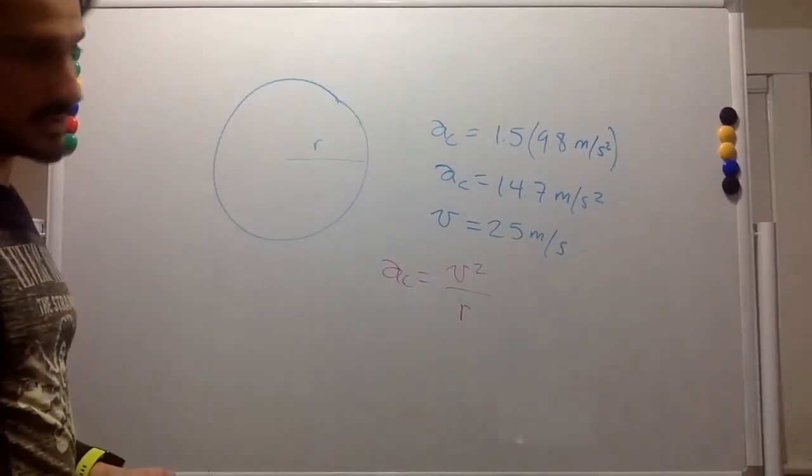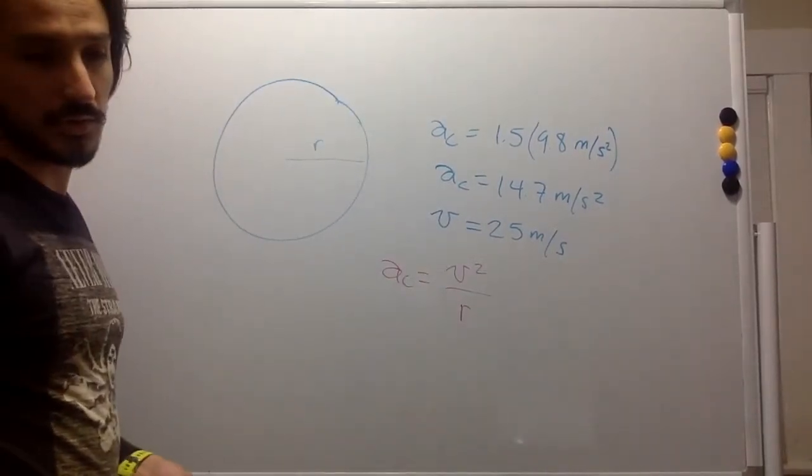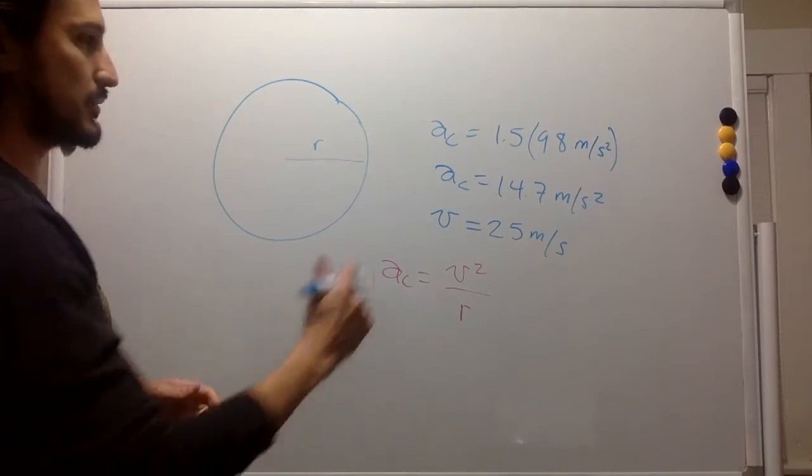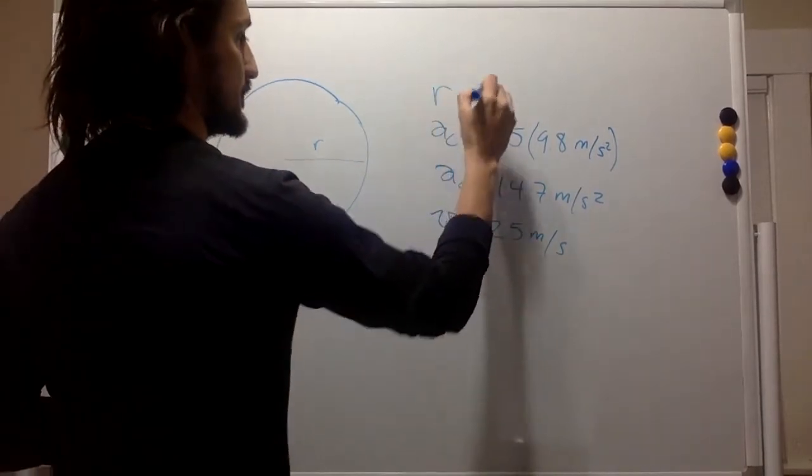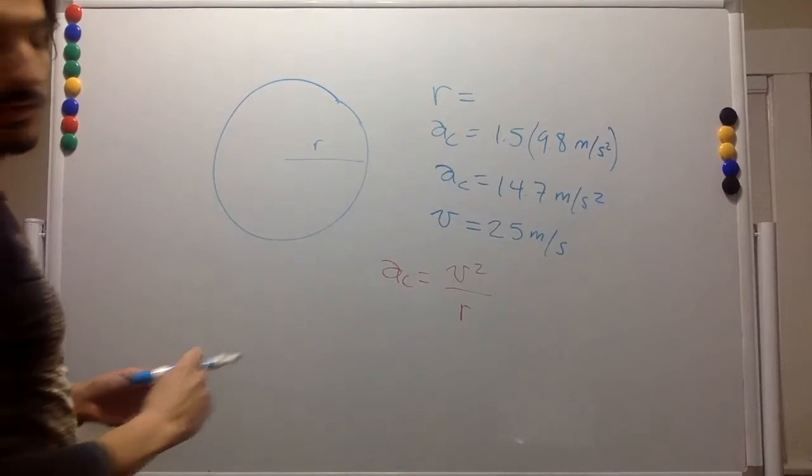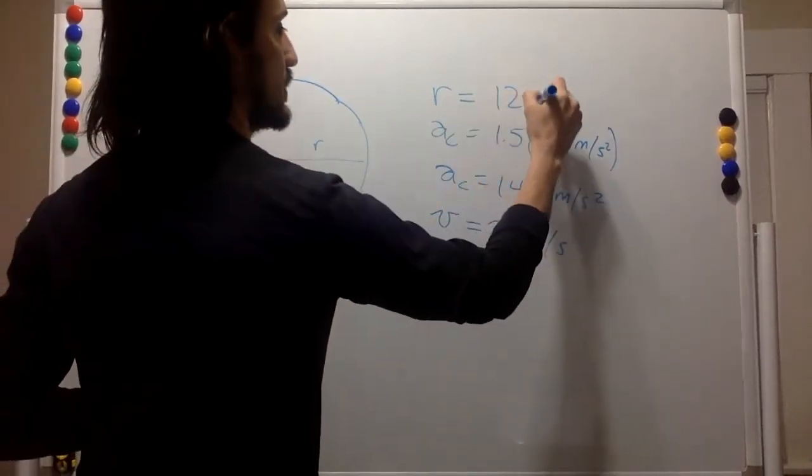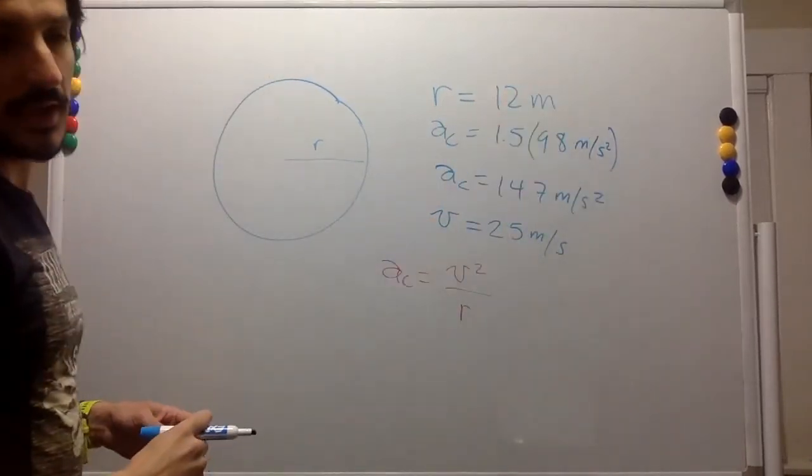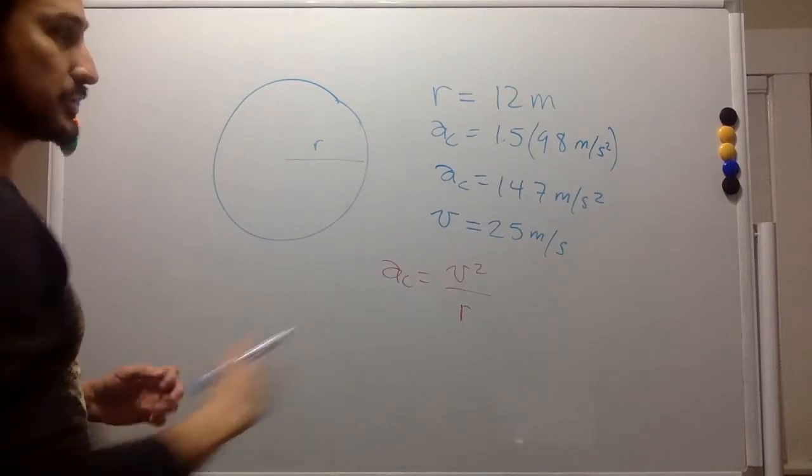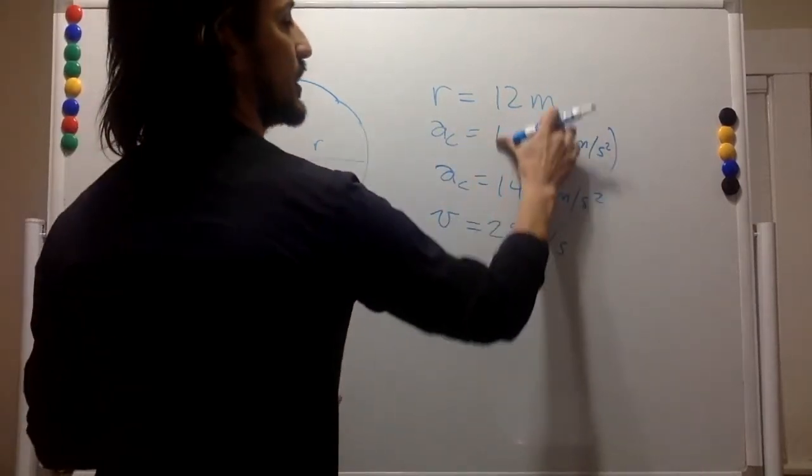We know the radius is going to be 12 meters, and we know the centripetal acceleration is going to be 10 times g.